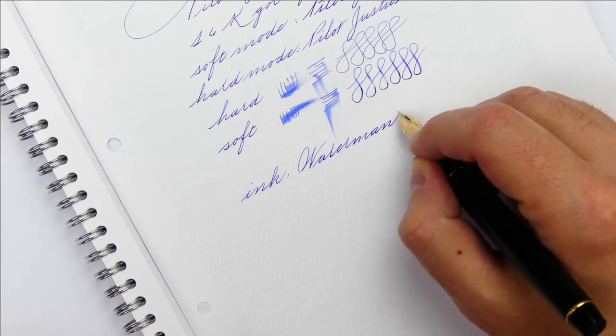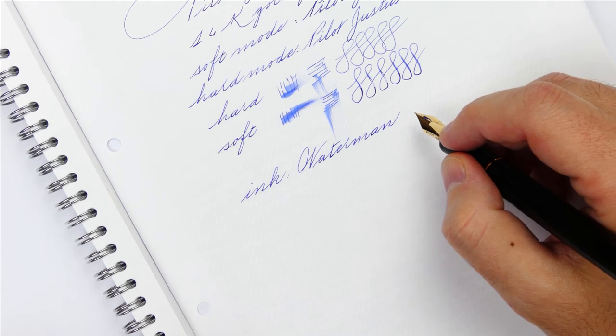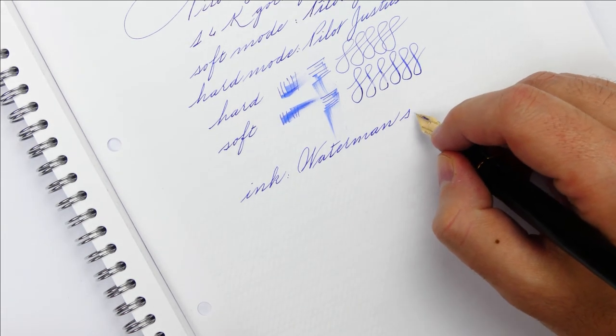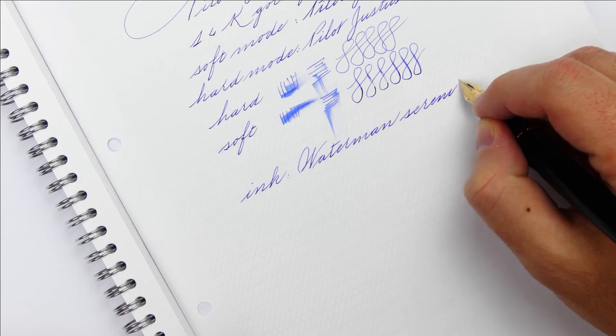In soft mode this nib is perfectly balanced, not too wet or too dry and leaves a western extra fine line on the paper.